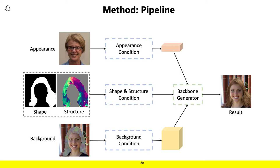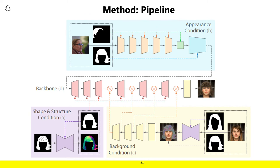The overall pipeline for this approach passes the different types of conditioning data through separate layers, which are then combined with a backbone generator that composites this data with the background while remaining true to the different types of conditioning — the shape, structure, and appearance specified by the user. The appearance and shape and structure conditioning data are passed in separate stages before being combined with the background condition in the backbone generator. The shape and structure conditioning can also be adjusted by user edits to allow for local edits to the overall structure of the target hairstyle.